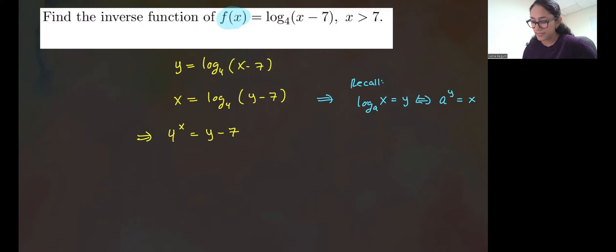And finally we solve for y by adding 7 to both sides. So we have 4 to the power of x plus 7 is equal to y. That is your inverse function. And you're going to rewrite this as an inverse function of f. So f inverse of x is equal to 4 to the power of x plus 7. That is our inverse function.